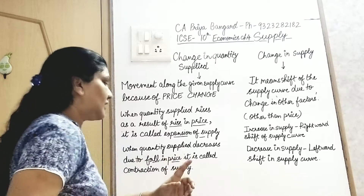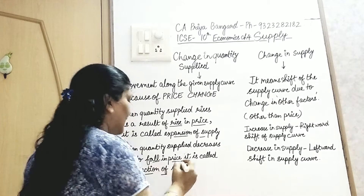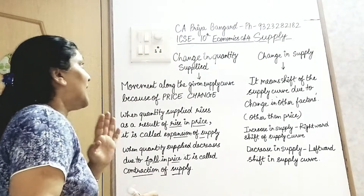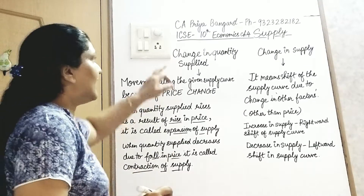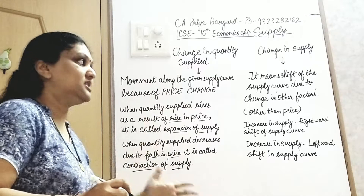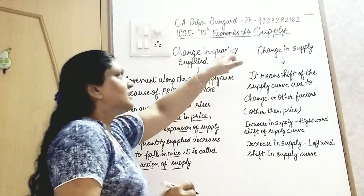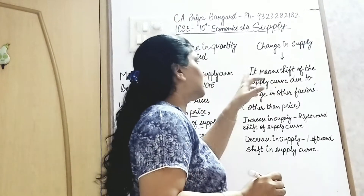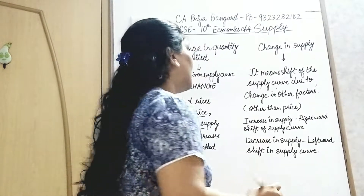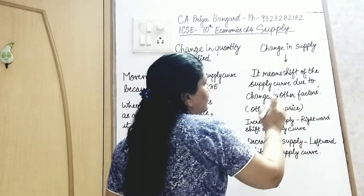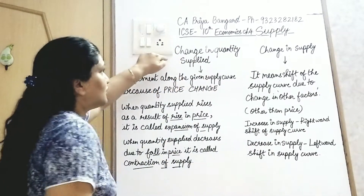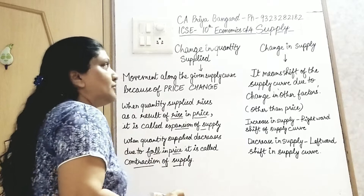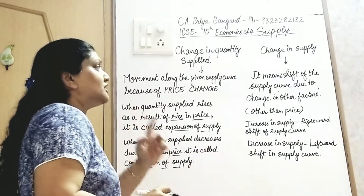So when price change karne se hoga, tab usse change in quantity supplied kehte hain. Change in quantity supplied is due to change in price only. Both upward and downward movements along the supply curve are due to change in price.